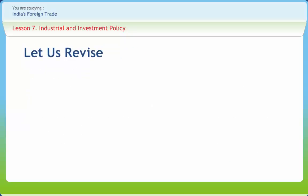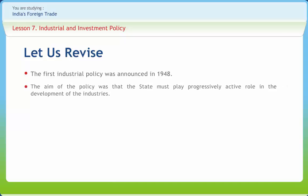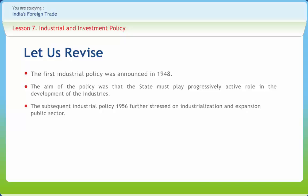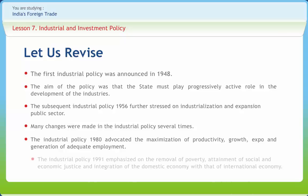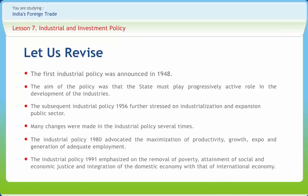Let us briefly revise what we have studied. The first industrial policy was announced in 1948, with the aim that the state must play a progressively active role in the development of industries. The subsequent industrial policy of 1956 further stressed industrialization and expansion of the public sector. The industrial policy of 1980 advocated the maximization of productivity, growth, export, and generation of adequate employment. The industrial policy of 1991 emphasized removal of poverty, attainment of social and economic justice, and integration of the domestic economy with the international economy.